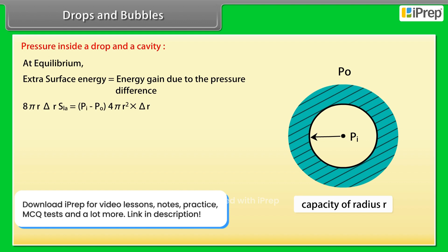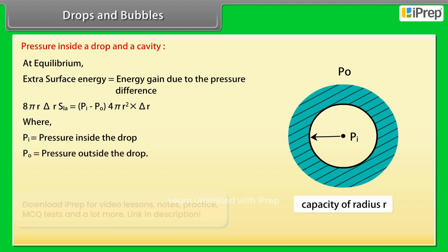Pi is equal to pressure inside the drop, Po is equal to pressure outside the drop. After calculation, we get Pi - Po is equal to 2S/r.